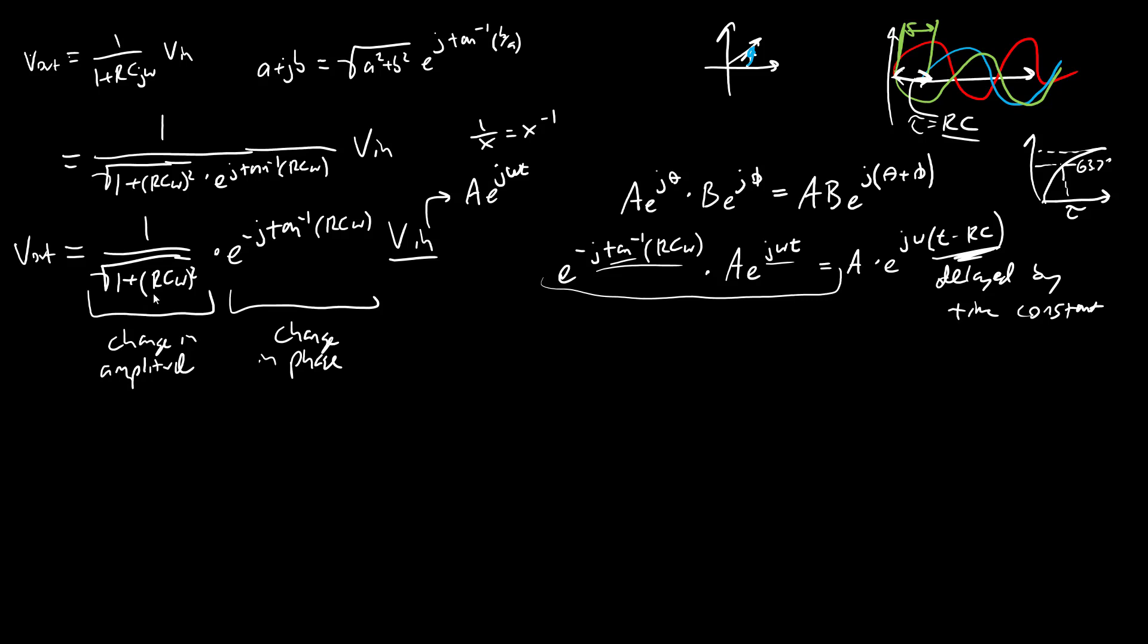Okay, great. We have an equation for Vout as a function of Vin. And remember, we want to know, well, what do the graphs look like? What does Vout look like as a function of frequency? And what does our phase difference look like as a function of frequency? And we can look at, okay, what are the interesting limits here as either omega approaches zero, or we have a DC input, or omega approaches infinity.